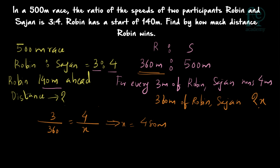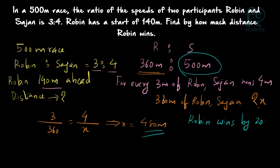How many meters has Sajan run? He has to run the entire 500 meters total. But by the time Robin has reached the finishing line and completed the race, Sajan has run only 480 meters. That means Sajan is 20 meters behind the finishing line, so Robin will be winning by 20 meters.